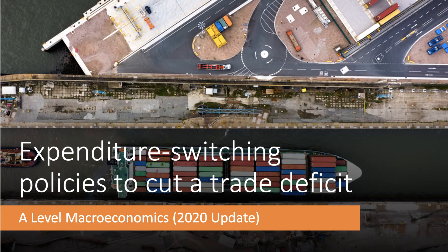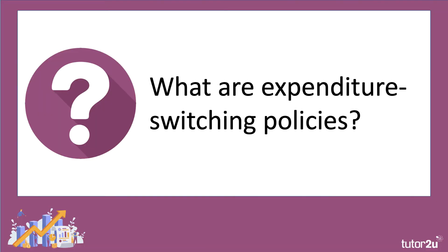Welcome to our new section of our series of videos looking at the balance of payments. In the next three videos we're going to spend a few minutes each looking at different ways in which your government might try to close a large external current account deficit — in particular, policies designed in theory to reduce the size of a trade deficit. In this video we'll focus on something called expenditure switching policies.